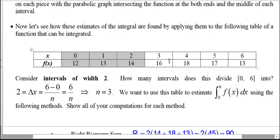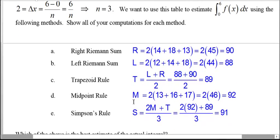We can do this if given a table, a graph — reading the y-values off the graph — or a formula for f(x) to generate the values. At this point you should be able to work any kind of problem given a graph, table, or formula, illustrating each of the right, left, trapezoid, midpoint, or Simpson's rule as areas of rectangles or trapezoids, and compute these estimates.